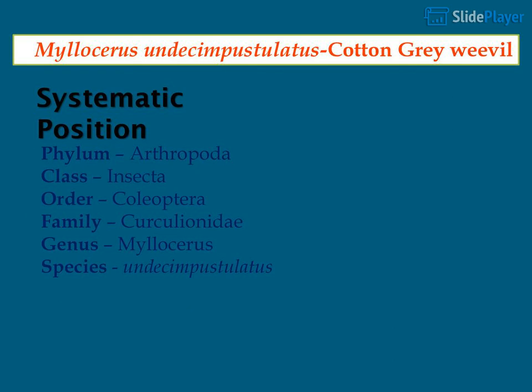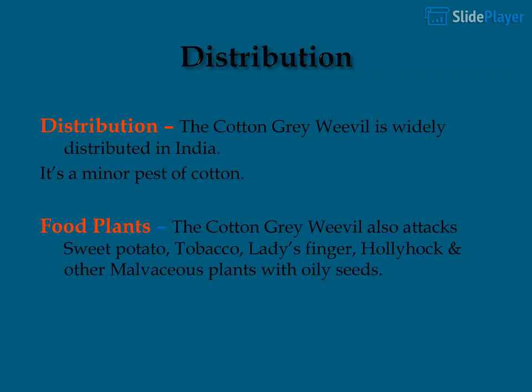Myllocerus undecimpustulatus, the Cotton Gray Weevil: it is widely distributed in India and is a minor pest of cotton. It also attacks sweet potato, tobacco, lady's finger, hollyhock, and other malvaceous plants with oily seeds.